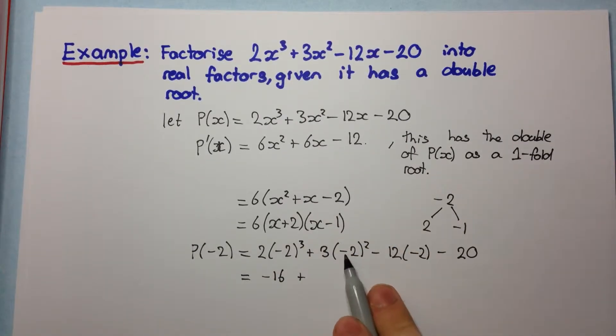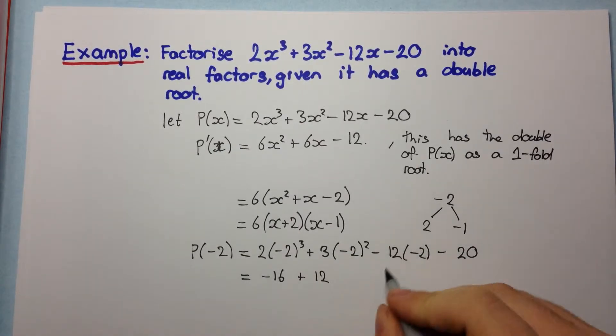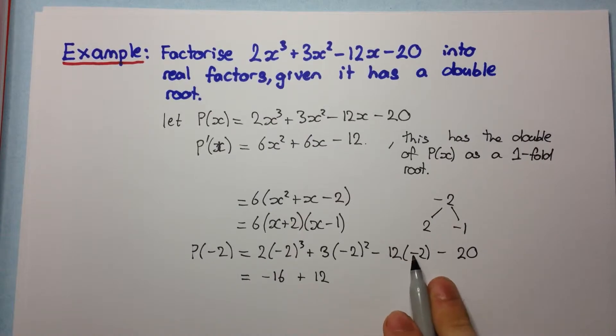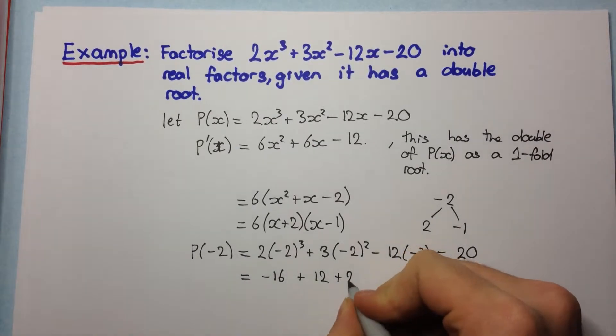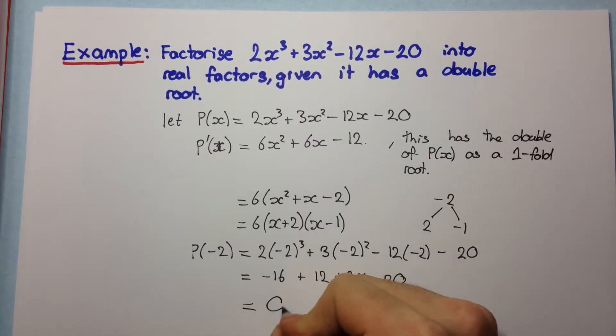Plus, now -2 squared is positive 4 times 3 is positive 12, so plus 12. Now -12 times -2, that's positive 24, so we get plus 24 and just minus 20 here. Now we see that this all equals to 0.